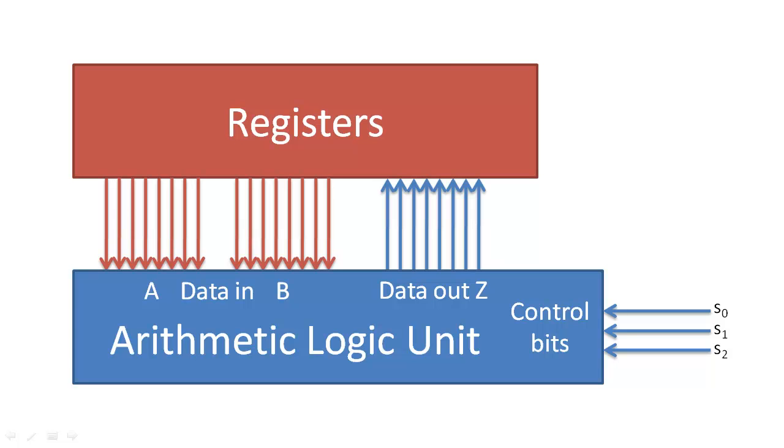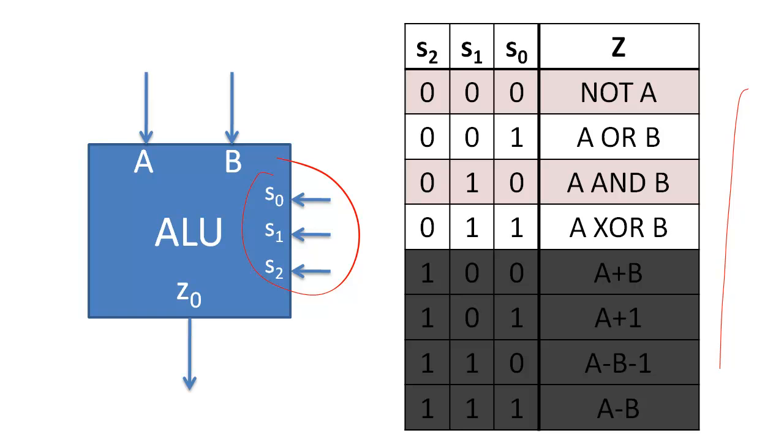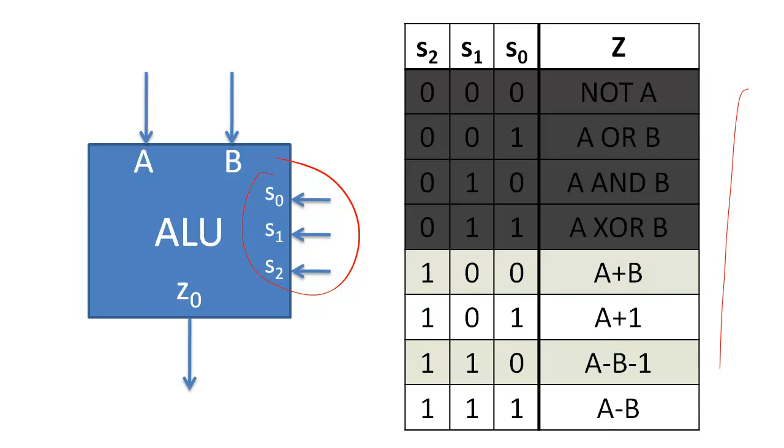Suppose now that we want to implement an ALU that receives three control bits and executes eight operations. I have designed this ALU so that when S2 is 0, we execute one of four logic operations, and when S2 is 1, we execute one of four arithmetic operations.